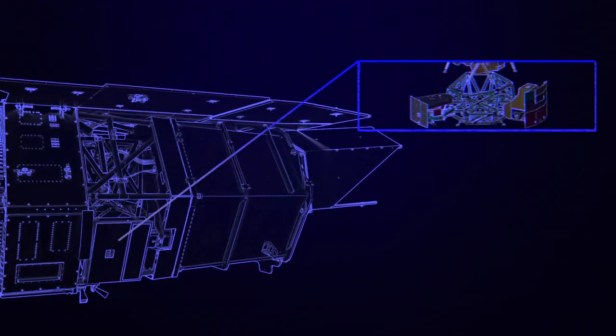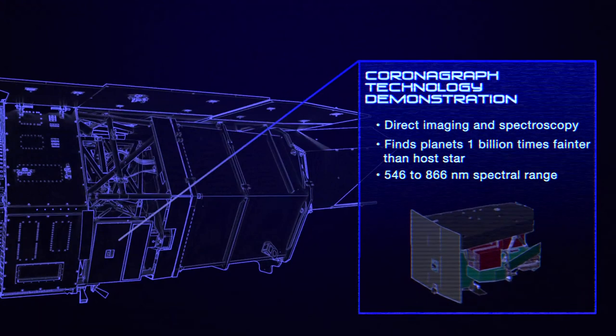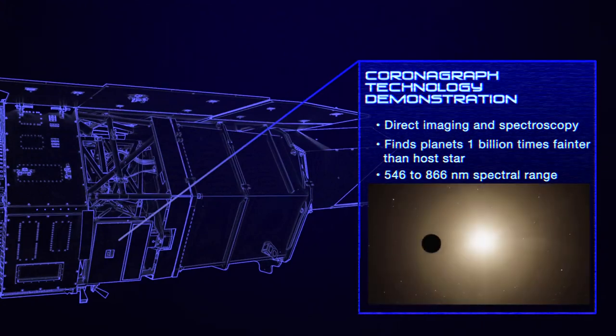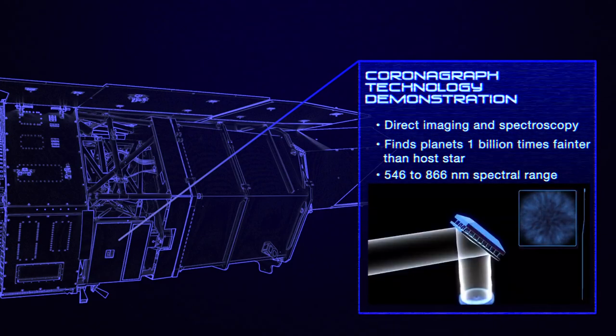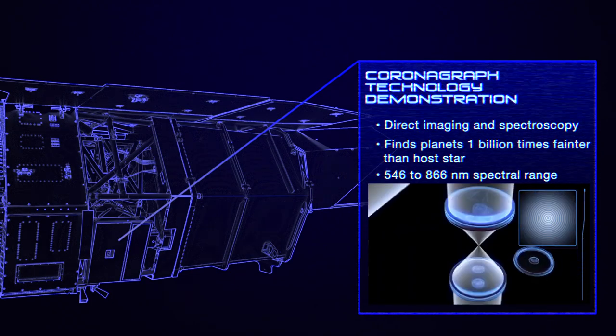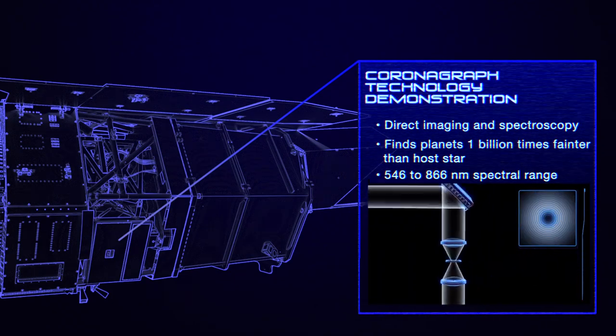Roman's other instrument is its coronagraph technology demonstration. A coronagraph blocks a star's light to capture the faint light from orbiting planets. It will be the first time a space telescope has used deformable mirrors to precisely control the incoming light, and special masks to block only the starlight.